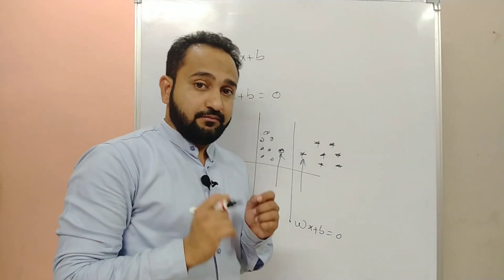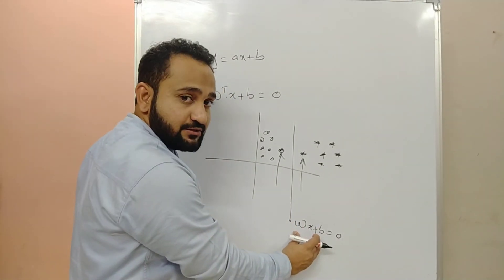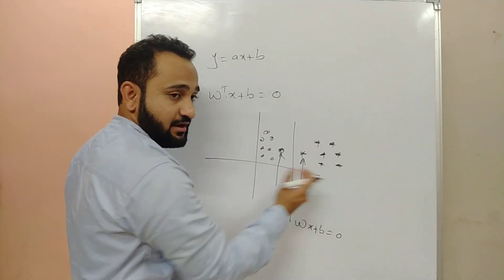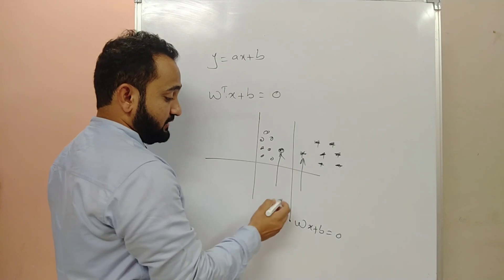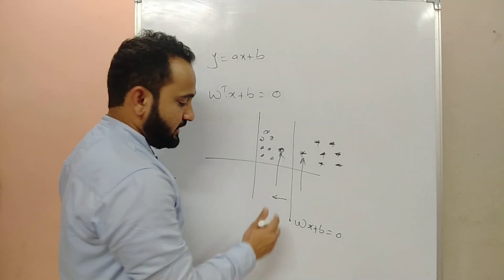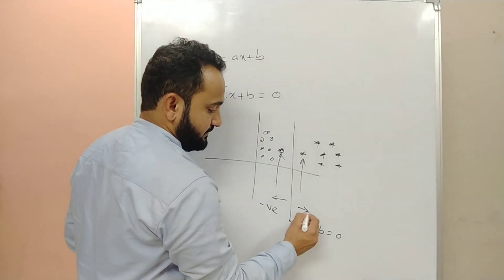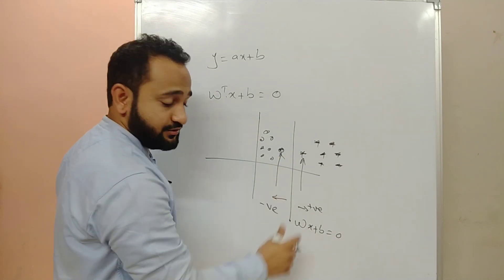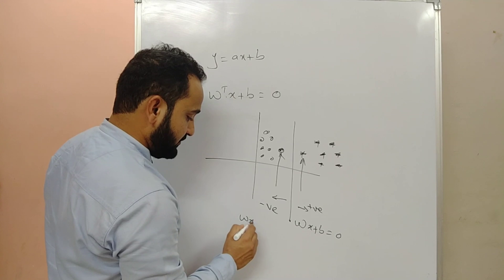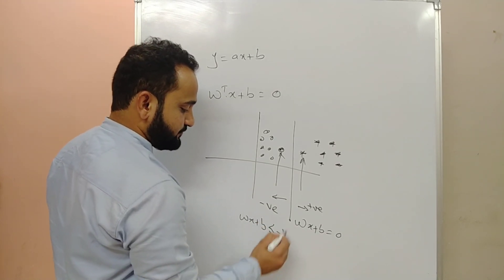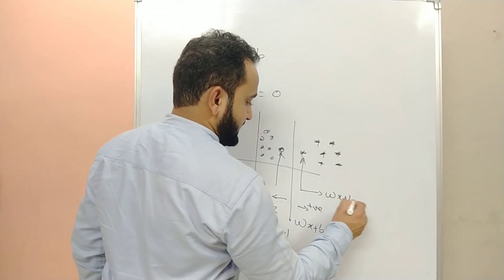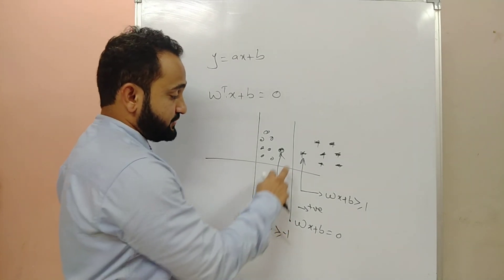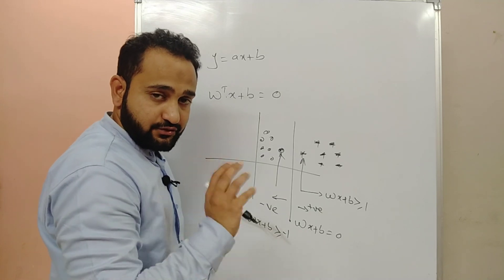SVM considers two sides of the hyperplane: the left-hand side and the right-hand side. You have one type of class on each side. All the points lying on the negative side satisfy WX + B ≤ -1, and at the positive side, WX + B ≥ 1. We are least bothered about the other points — we are just concerned about the support vectors, as the calculation in SVM is based on support vectors.